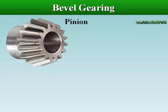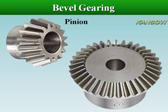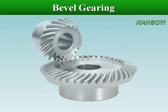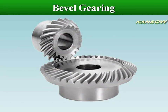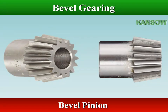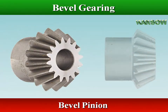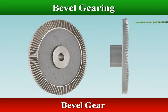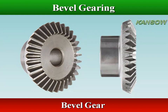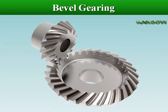Bevel gear has a cone-shaped appearance as its pitch surface and its teeth are cut along the cone. Bevel gears are not interchangeable and always designed in pairs. Two bevel gears in mesh is known as bevel gearing.